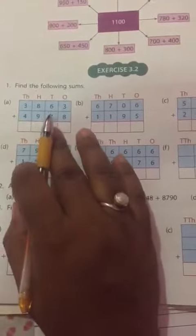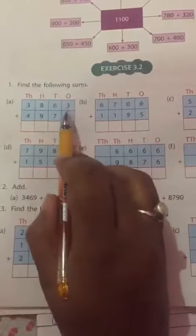Aaj hum kya karenge? Sums banayenge, ok? Now question number 1 hai, thousands, hundreds, tens and ones. Start hum ones se karenge, ok?